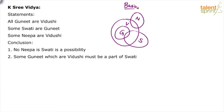Now let's look at the conclusions. The first one: 'No Neepa is Swati' is a possibility. Clearly, in the basic diagram itself you find that no Neepa is a Swati. So is it possible? Yes, it is possible. Since it is about possibility, we're not worried too much — even if one diagram satisfies it, we can say it's possible. So 'No Neepa is Swati' is a possibility.